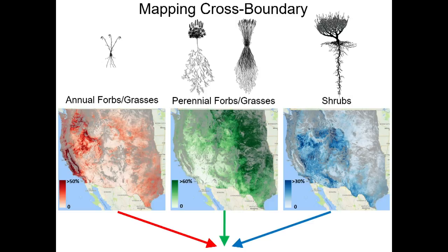We're mapping across boundaries — across public and private areas. We're using the historical Landsat archive, all images available, plus climate and weather data. We're building models to predict and map these across space and across time. This is important because this is the information that rangeland managers need to manage and plan ahead. They need to know what the historical trends have been in the areas they manage, whether it's a pasture, allotment, watershed, or landscape.